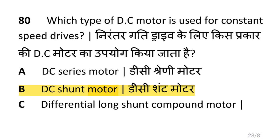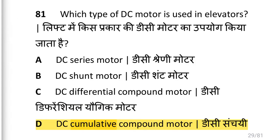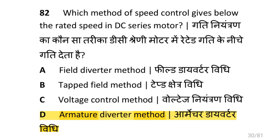Which type of DC motor is used for constant speed drives? That is DC shunt motor. Which type of DC motor is used in elevators? That is DC cumulative compound motor. Which method of speed control gives below the rated speed in DC series motor? That is the armature diverter method.